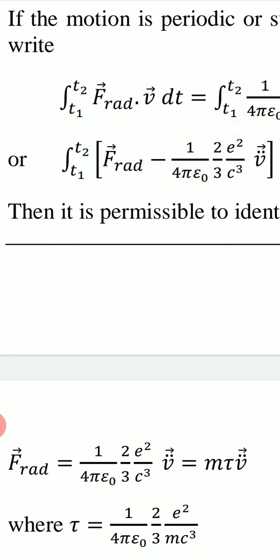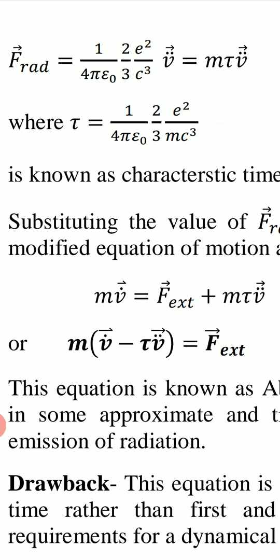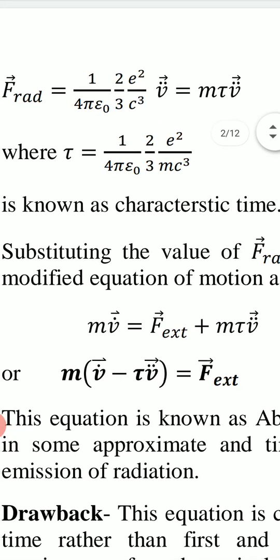The radiative reaction force is: F_rad = (1/4πε₀)(2/3)(e²/c³) v-double-dot, which we write as m·tau·v-double-dot. Here the characteristic time tau = (1/4πε₀)(2e²)/(3mc³), which has dimensions of time. This tau is known as the characteristic time of the system.